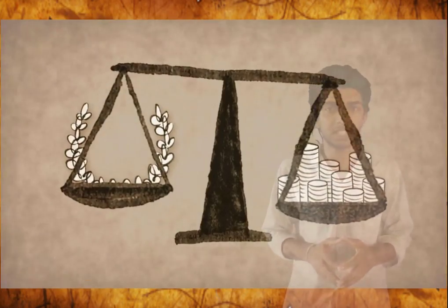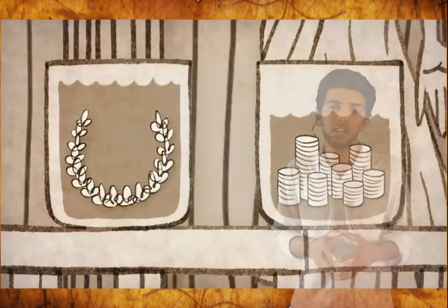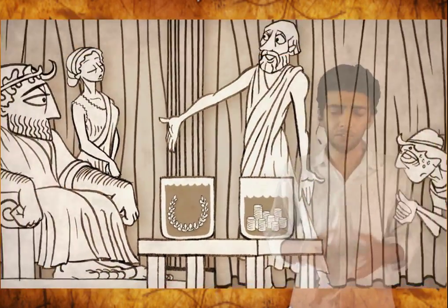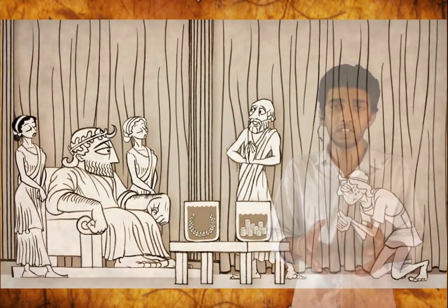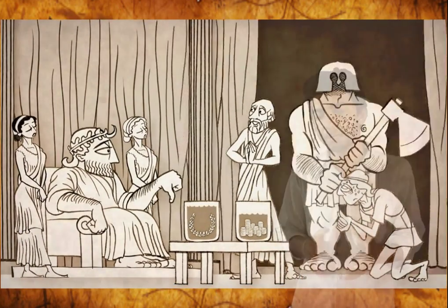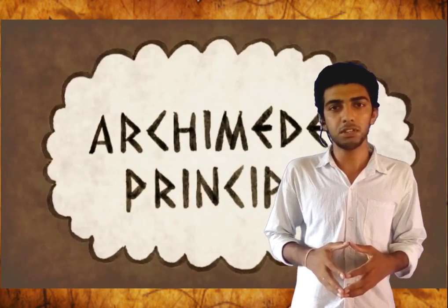Now, if the crown density is found to be less, then the goldsmith must have cheated. The same experiment was done in front of the king and found the same result — the crown density was less. It means the goldsmith had cheated and he was punished by the king. In this way, Archimedes completed his experiment and gave us Archimedes' principle.